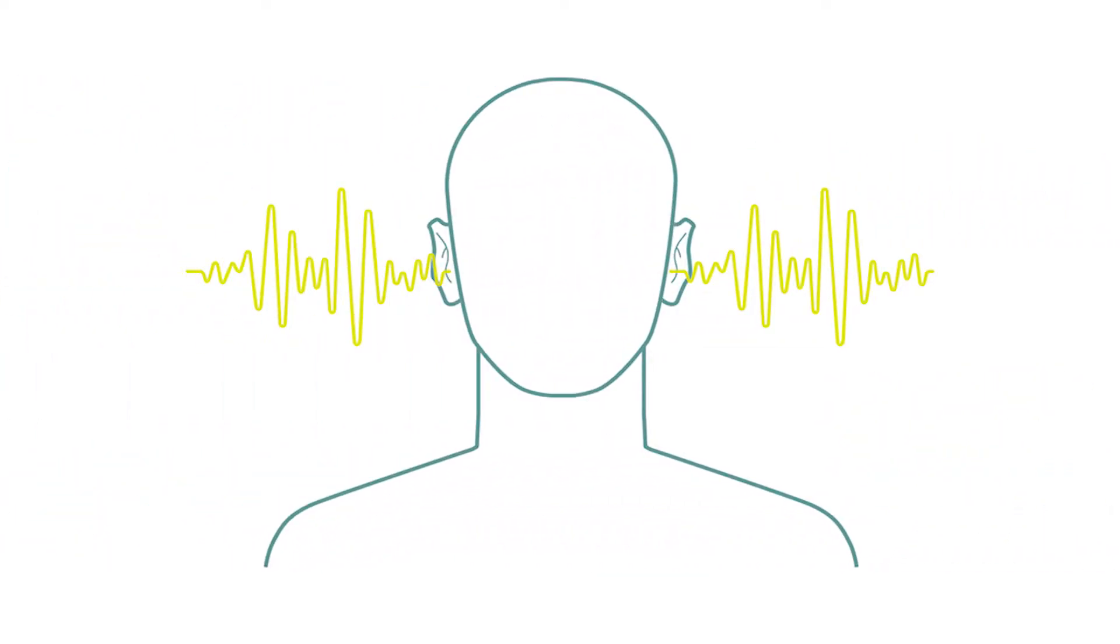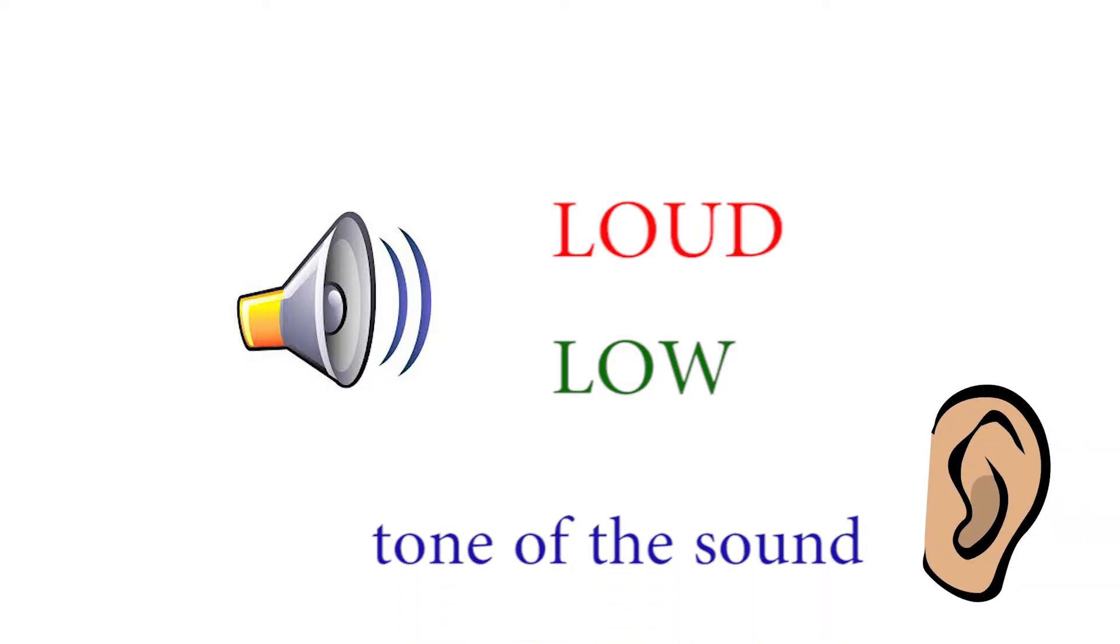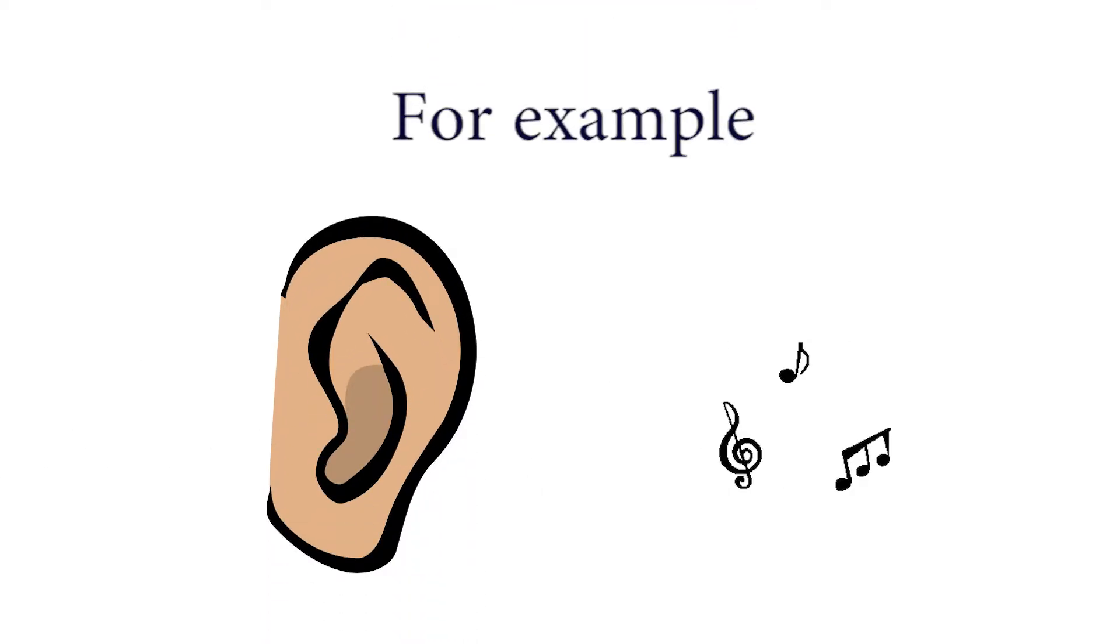With our two ears we can hear sound. Sound can be loud or low, and the ears help us determine the tone of the sound. For example, we listen to music through our ears.